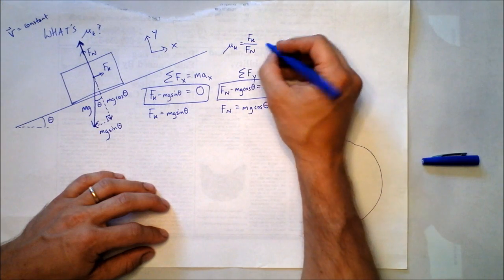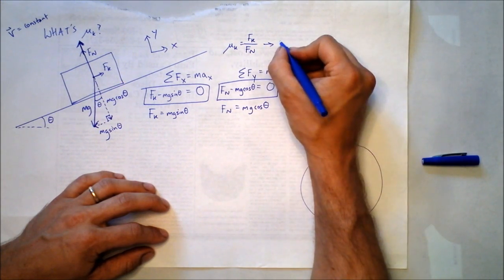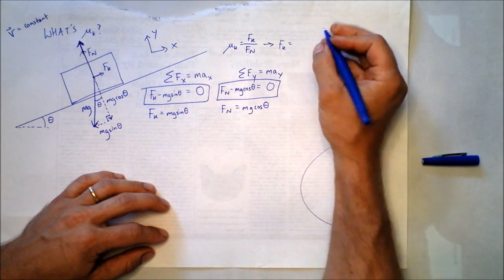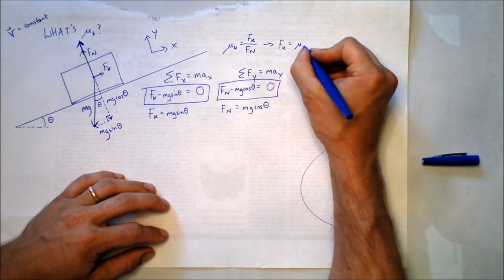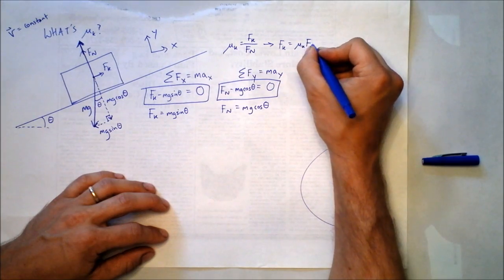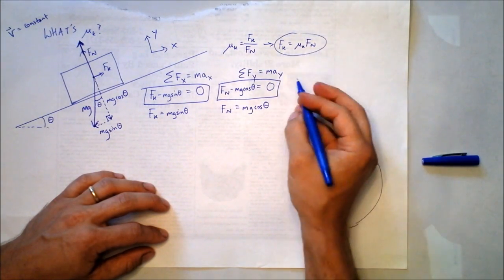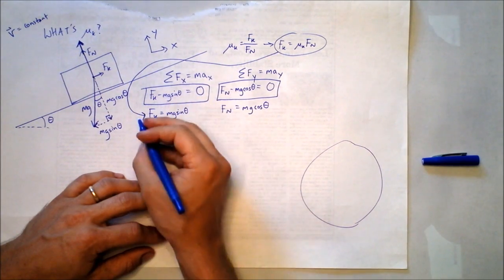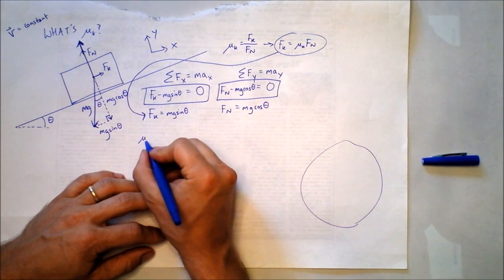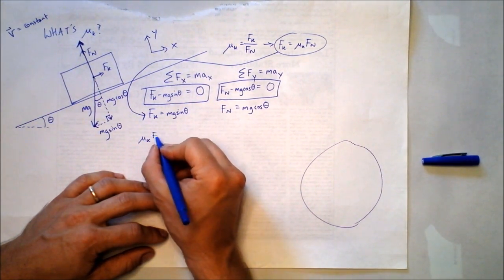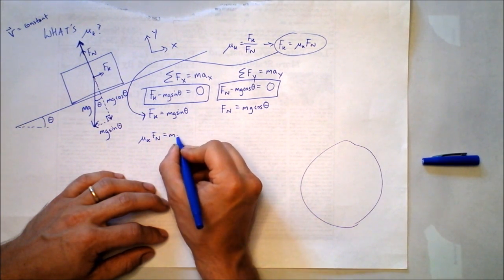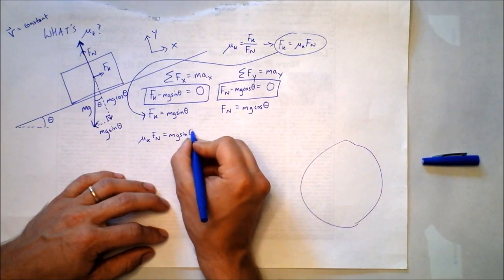Let's take this and solve it for f sub k. F sub k, in this case, is going to be equal to mu sub k times the normal force. Let's take this equation and plug it in over here. And that says mu sub k times the normal force is equal to m times g times sine of theta.